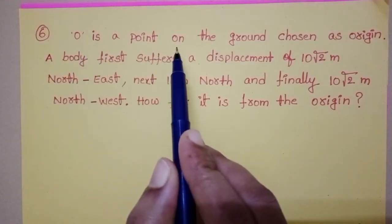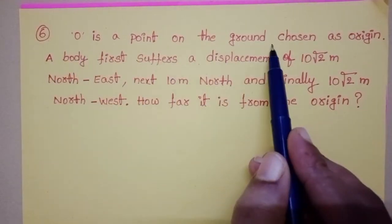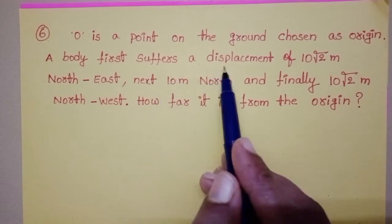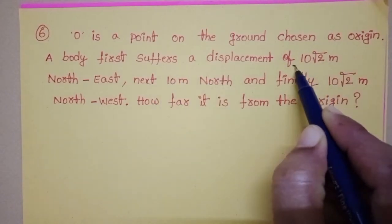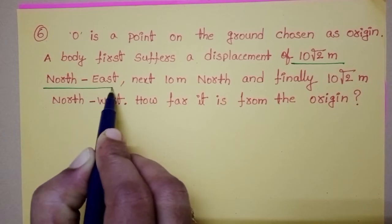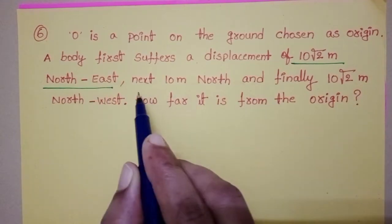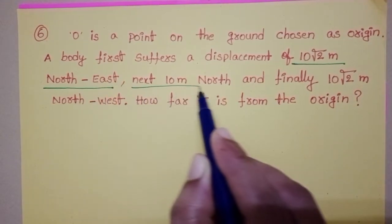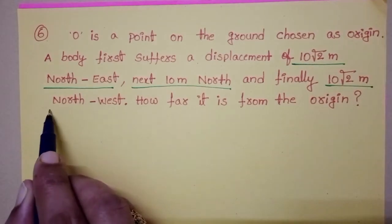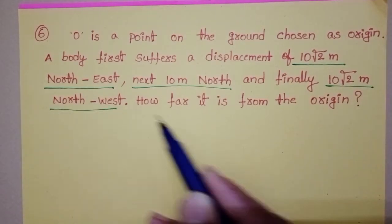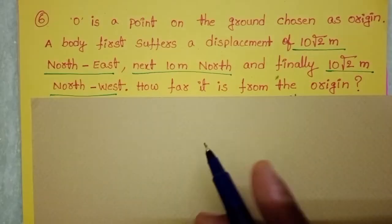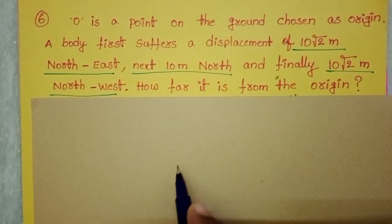O is a point on the ground chosen as origin. A body first suffers a displacement of 10√2 meters north east, next 10 meters north, and finally 10√2 meters north west. How far is it from the origin? Let us draw the diagram.